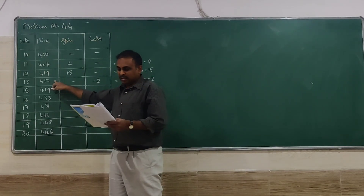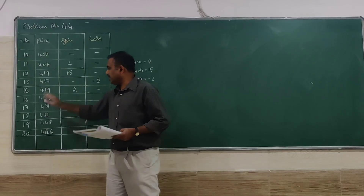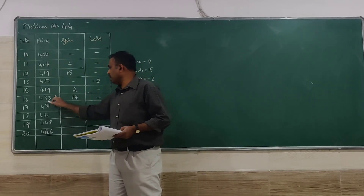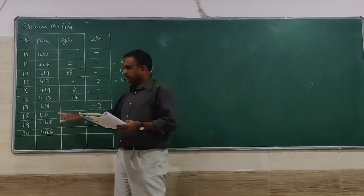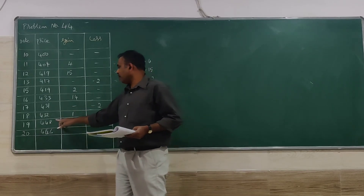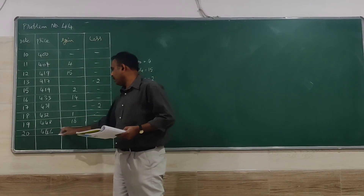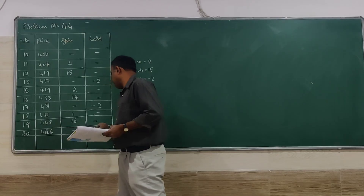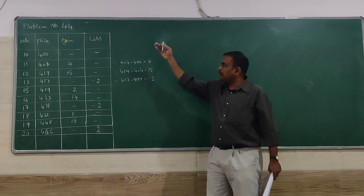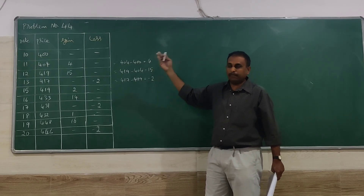Continuing: 19 minus 17 gives 2 rupees profit; 33 minus 19 gives 14 rupees profit; 31 minus 33 gives minus 2, a loss; 32 minus 31 gives 1 rupee profit; 48 minus 32 gives 16 rupees profit; 46 minus 48 gives minus 2, a loss. So first we find gain or loss like this, comparing each consecutive day's prices.